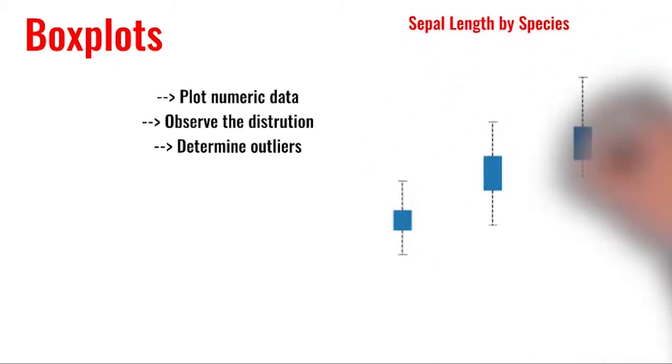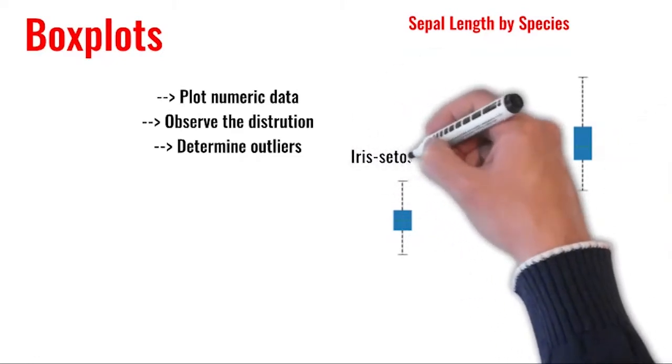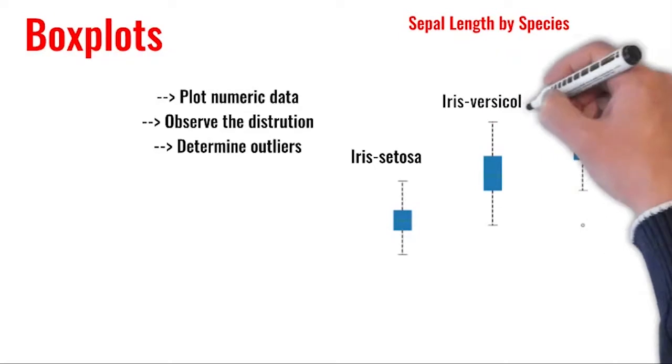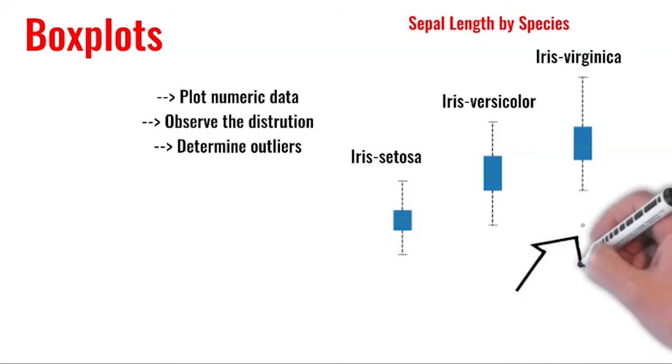Here, I am going to use the IRIS dataset which was used previously to plot BoxPlots. When the BoxPlots are plotted for all different species, it shows that IRIS virginica has the highest median sepal length.